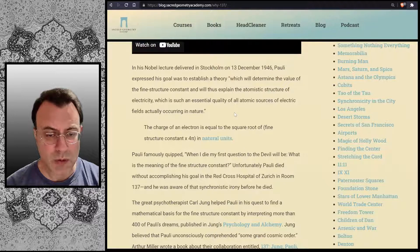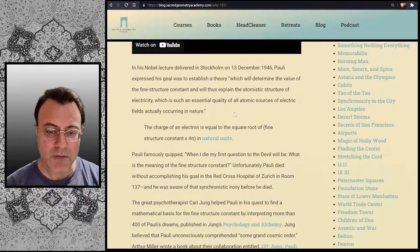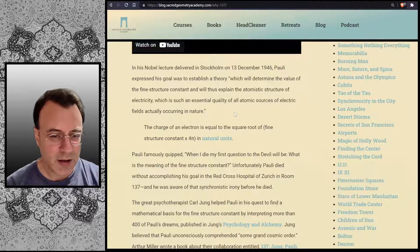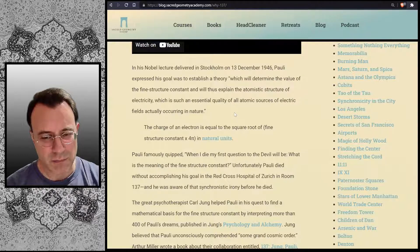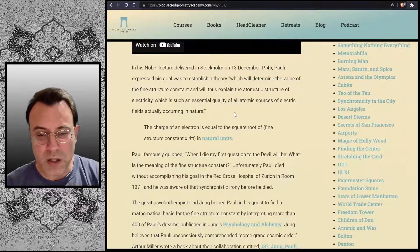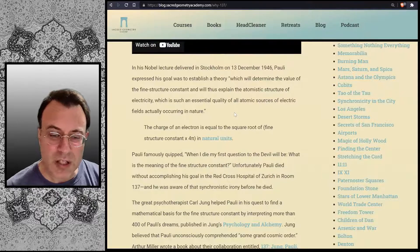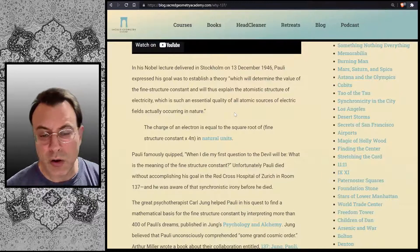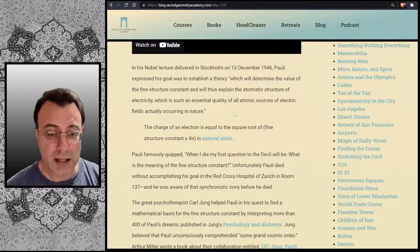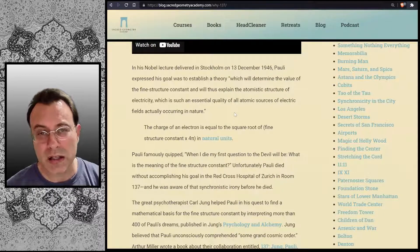The charge of an electron is equal to the square root of the fine structure constant times 4 pi in natural units. Pauli famously quipped: "When I die, my first question to the devil will be, what is the meaning of the fine structure constant?" Unfortunately, Pauli died without accomplishing his goal in the Red Cross Hospital of Zurich in room 137, and he was aware of that synchronistic irony before he died.